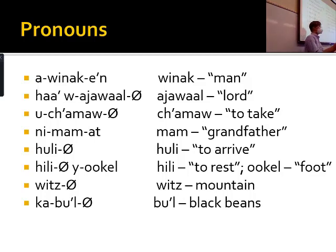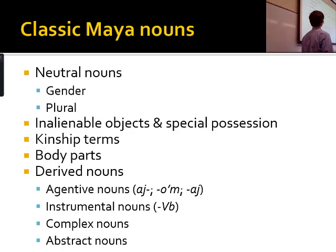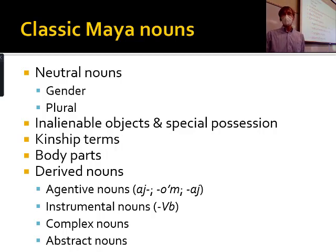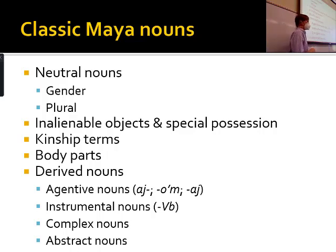It's also important to remember that there's no verb 'to be' in Maya languages. So we have to imagine these sentences as if they had that verb, because that's what you need in English. In the remaining time I'm going to discuss nouns — specifically how gender and plural are marked, and then I'll discuss possession.